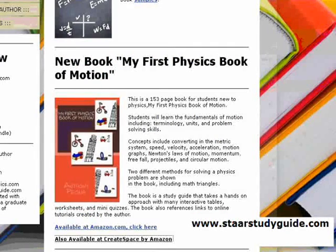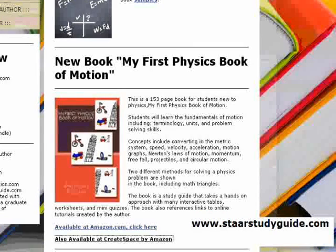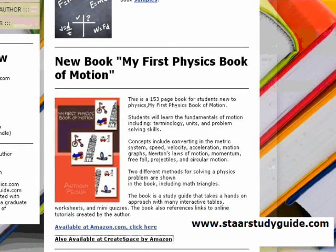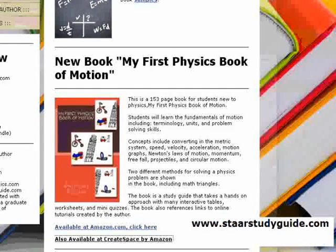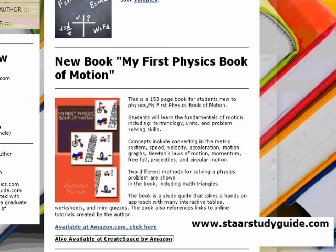So this tutorial is part of my book called My First Physics Book of Motion. It's a 153 page book. It's designed for students new to physics from high school to collegiate level. It makes sure that you learn the fundamentals and terminology, units, and problem solving skills. It shows two different methods there for solving problems. The study guide takes a hands-on approach.